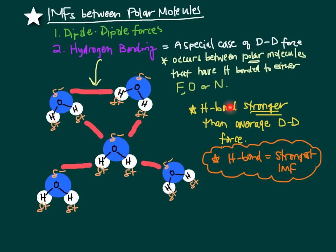That makes the hydrogen bond stronger than your average dipole-dipole force. Hydrogen bonding is the strongest of the intermolecular forces. In fact, water experiencing hydrogen bonding gives water all of its unique properties — and that's why belly flops hurt. When you belly flop into a pool and it makes your belly red, it's because you're breaking the strongest intermolecular force, this hydrogen bond.